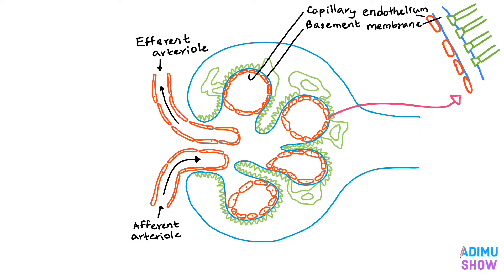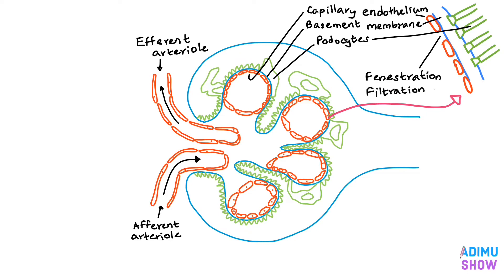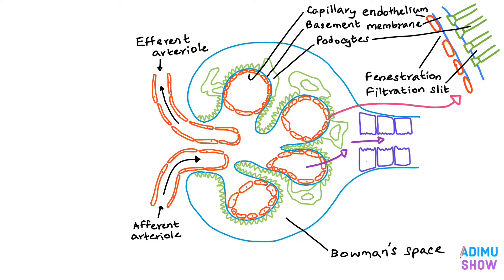The diameter of the afferent arteriole is larger than the efferent arteriole. The capillary endothelium and epithelium of the capsule separate the blood from the glomerular filtrate. The capillary endothelium is fenestrated with pores. It is surrounded by the glomerular basement membrane along with podocytes, which together form the filtration slit.